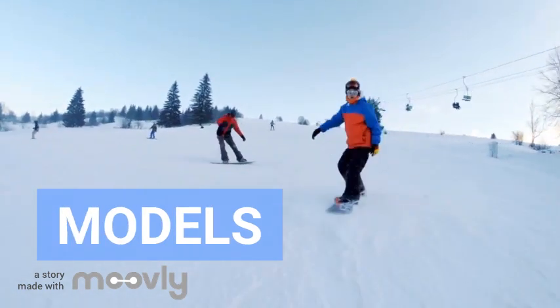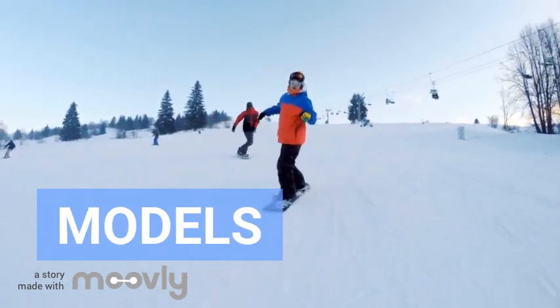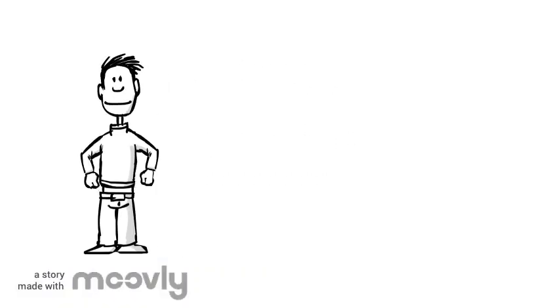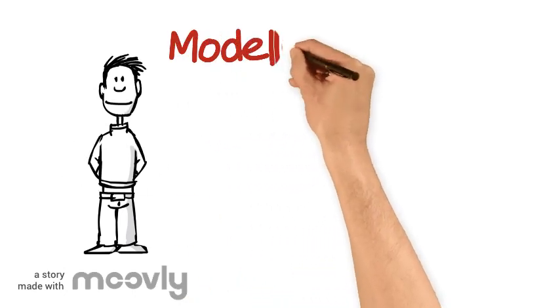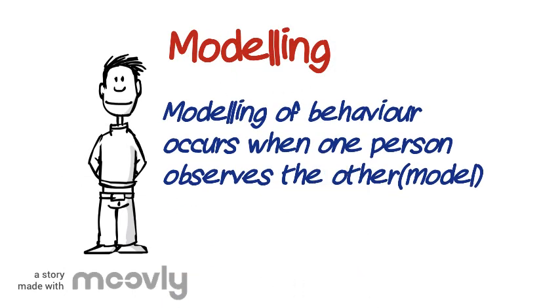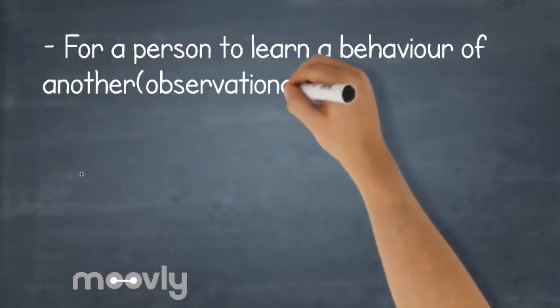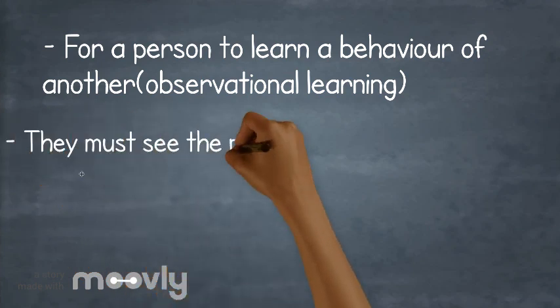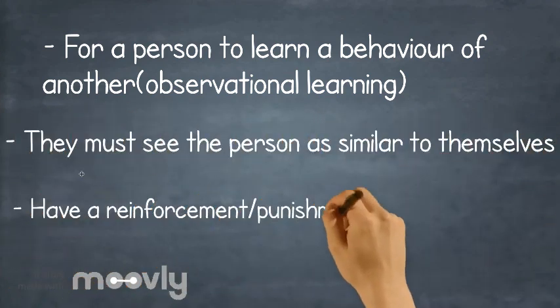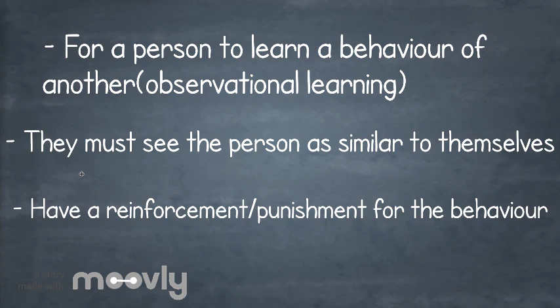Models, or modelling — a model is someone that someone else learns from by observing that behaviour. A great example of this is children and their parents, with the children being the learner and the parent being the model. This is quite obvious in children, as we see their behaviours quite often mimic their parents.